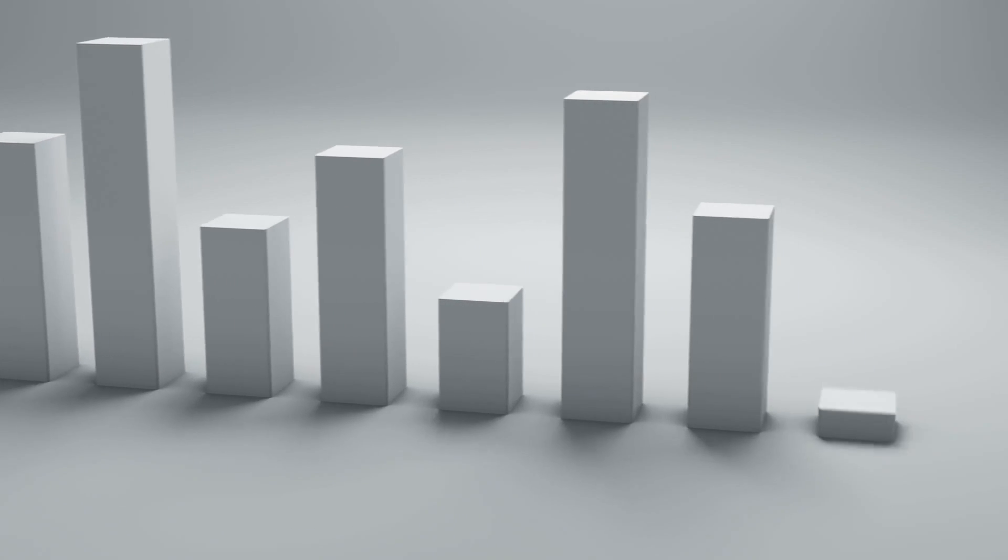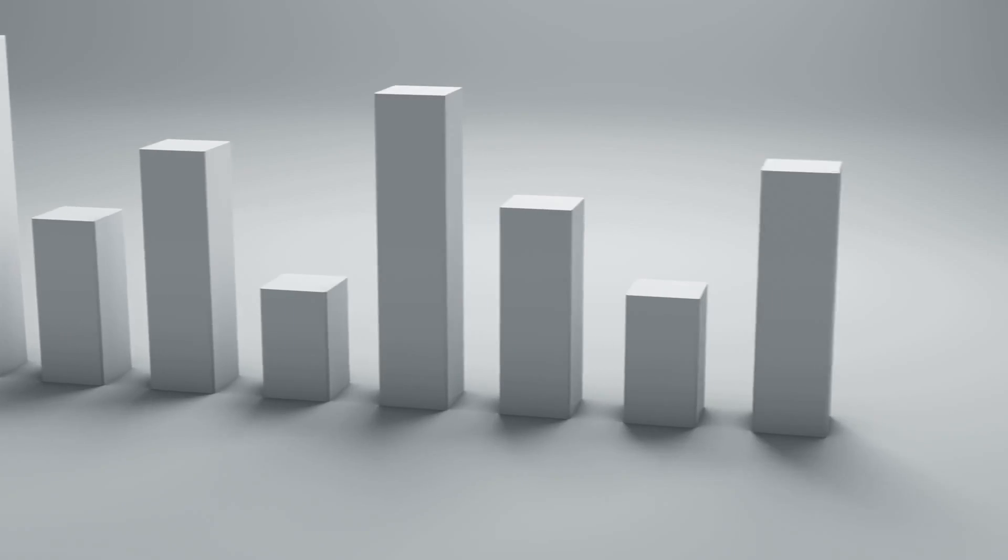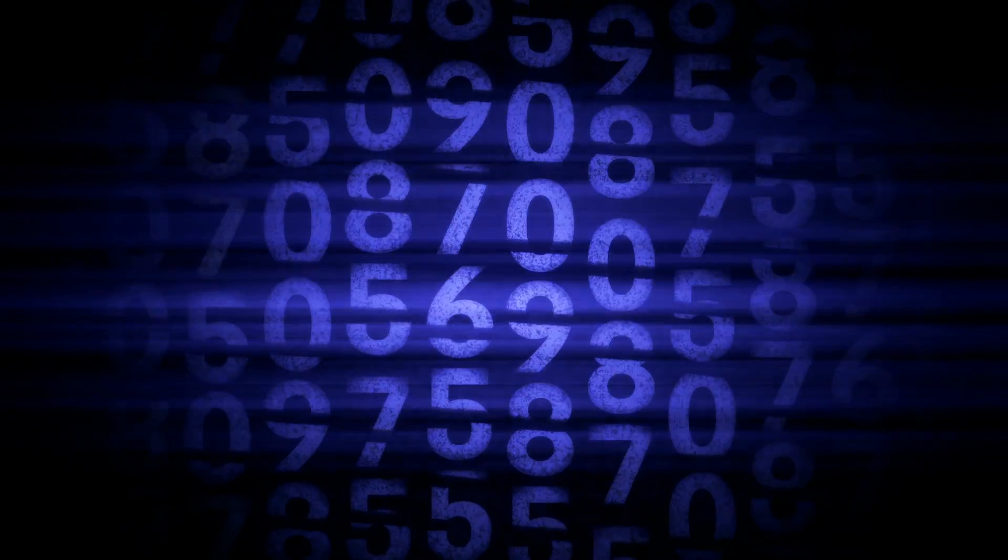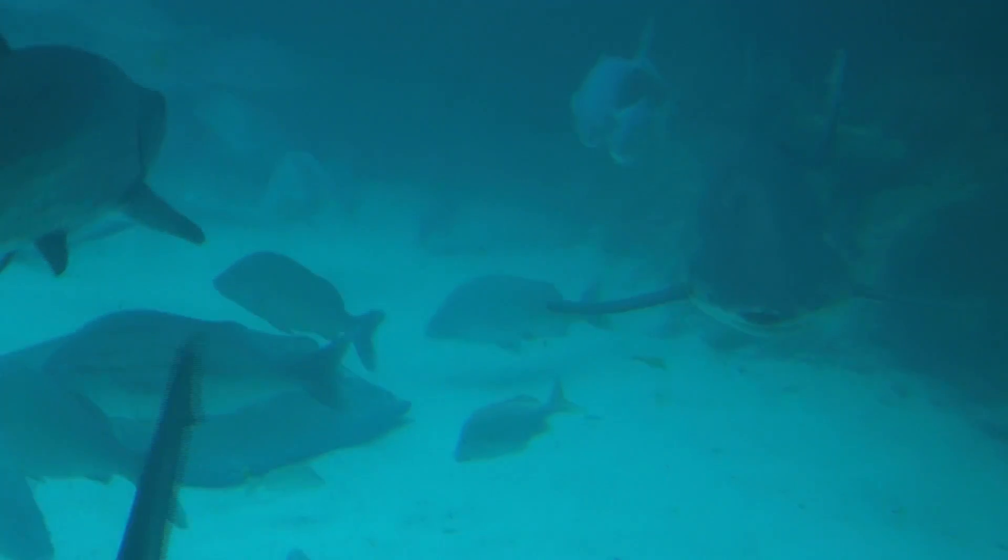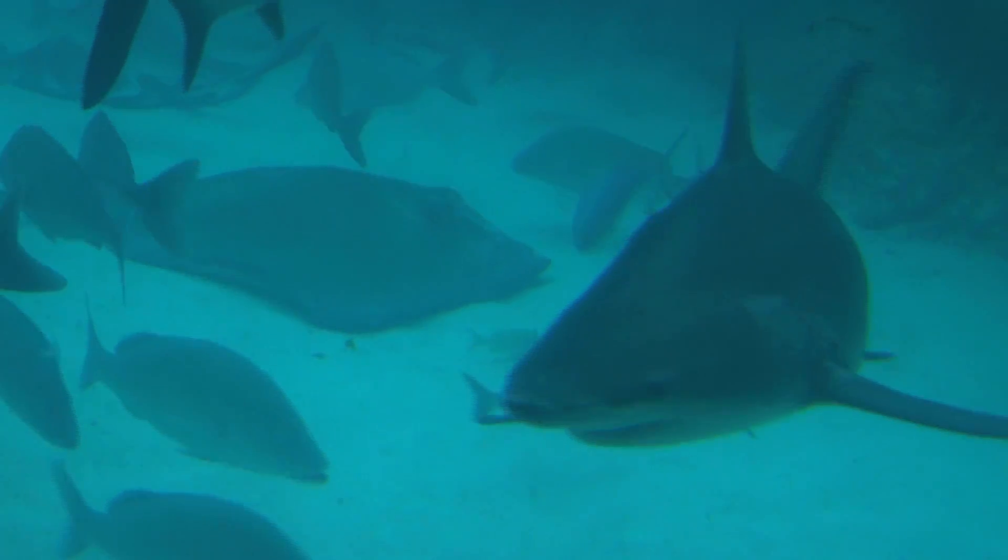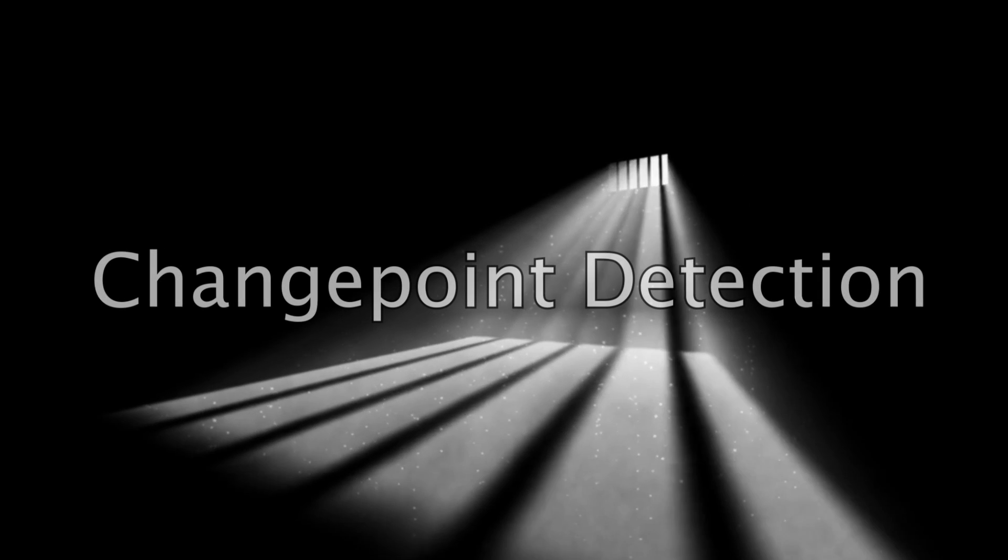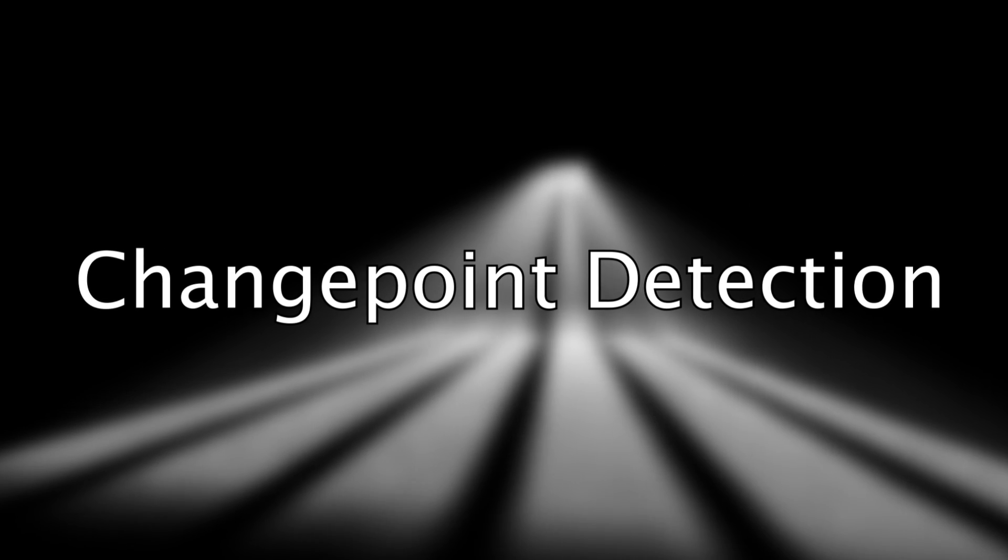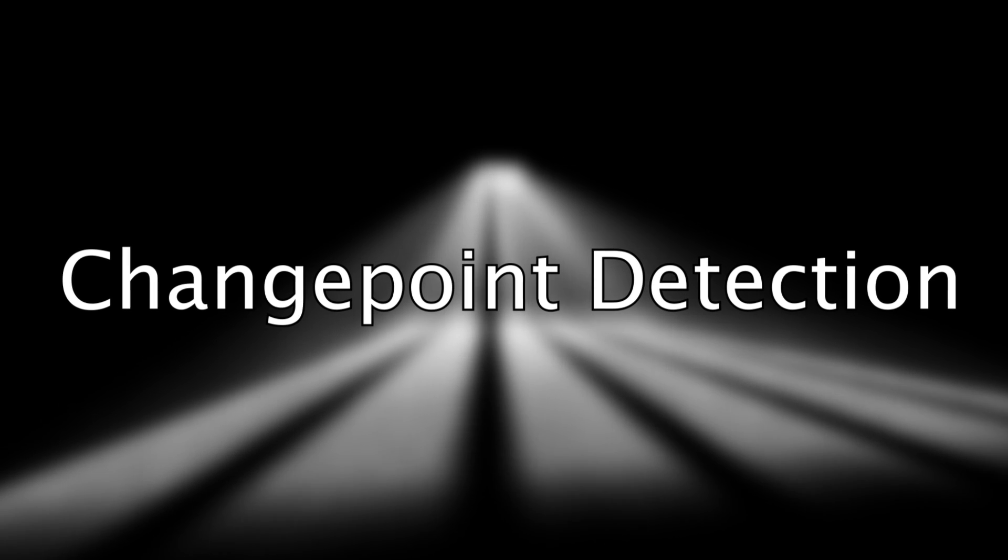But now let's acknowledge what I know many of you are thinking. How can we determine whether these increases are due to randomness, and when they aren't? I mean, what if sharks are showing up closer to the shore more often? Or what if poverty rates are causing an increase in crime, and we need to do something about it? Well, this brings us to change point detection, or the process of determining whether a real change has occurred beyond normal fluctuations in a system.